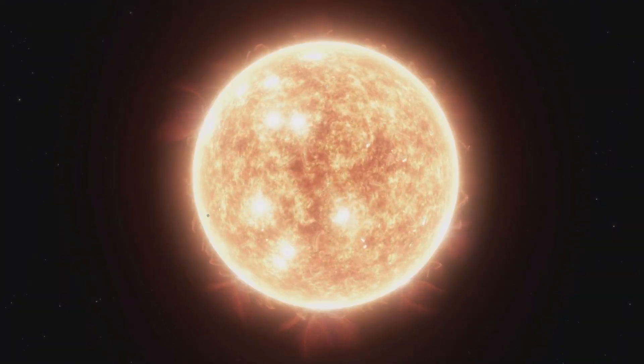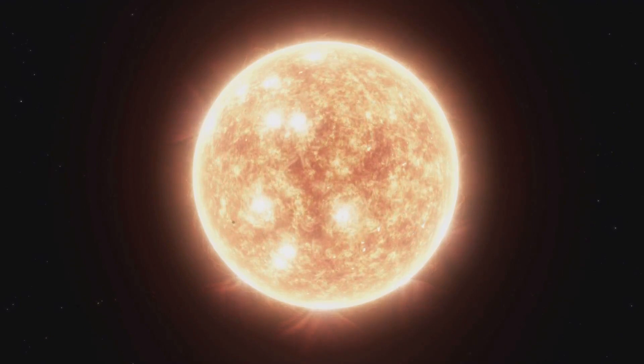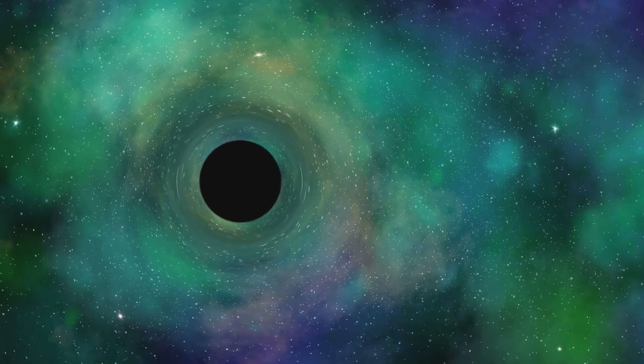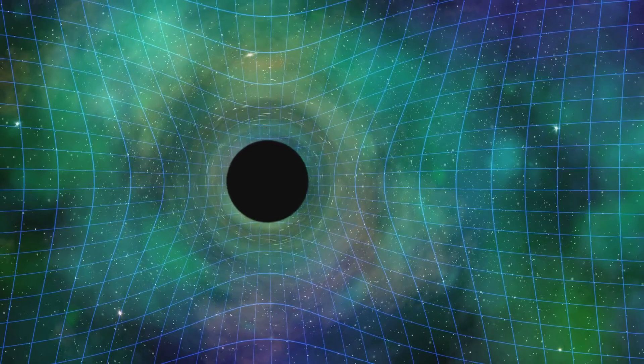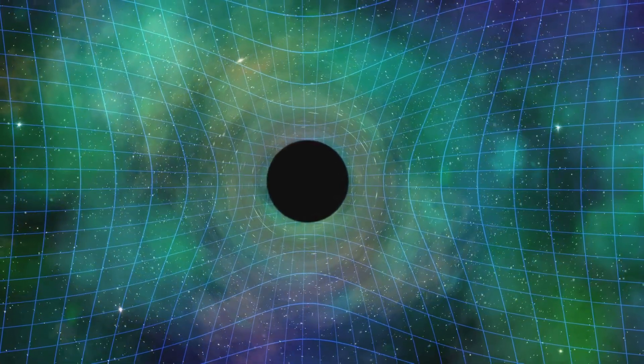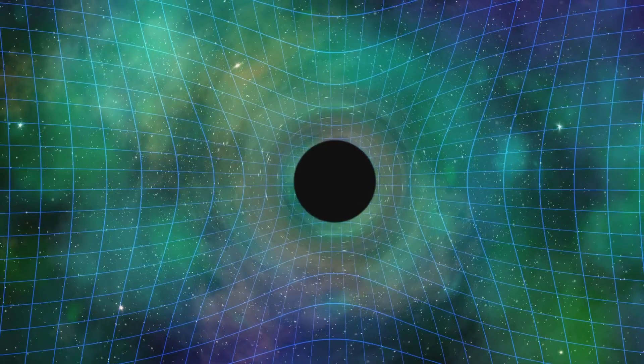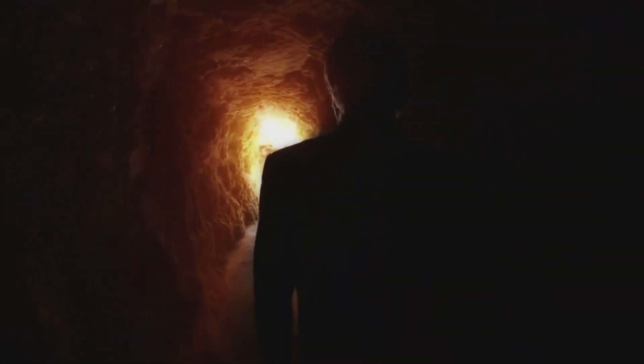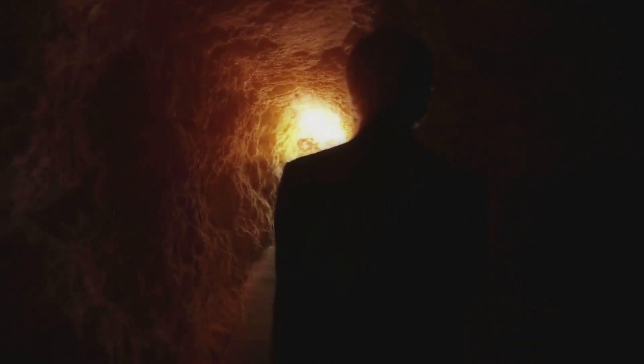Scientific evidence supporting relativity is robust. The perihelion precession of Mercury's orbit, where its closest point to the sun shifts over time, matches Einstein's predictions. Gravitational lensing, observed during solar eclipses and by telescopes, shows light bending around massive objects, confirming general relativity. But what about the mysteries and misconceptions that still linger?